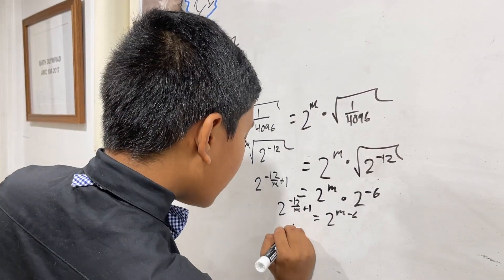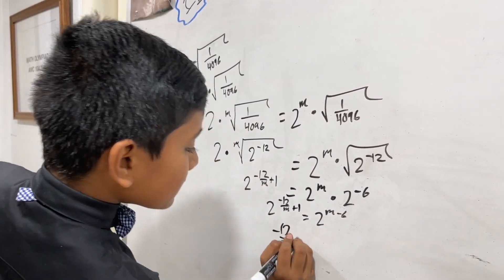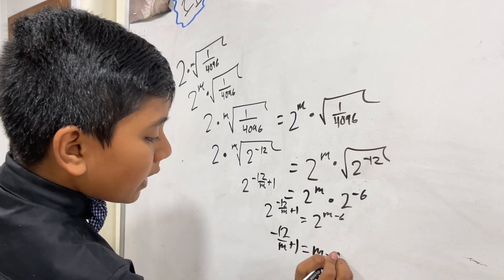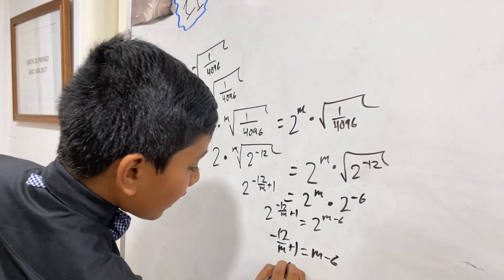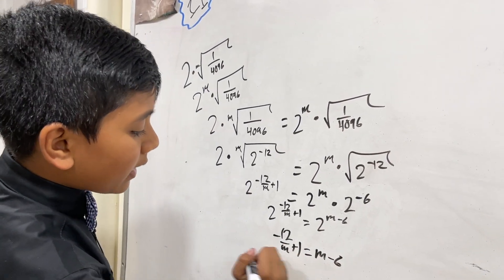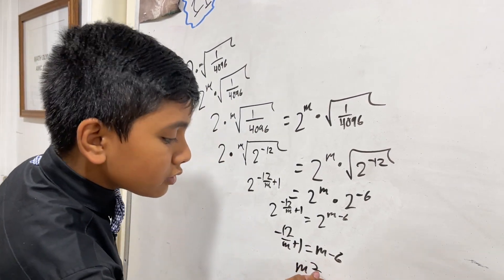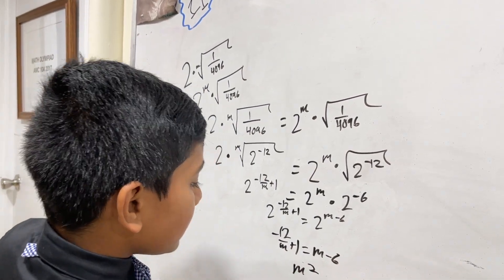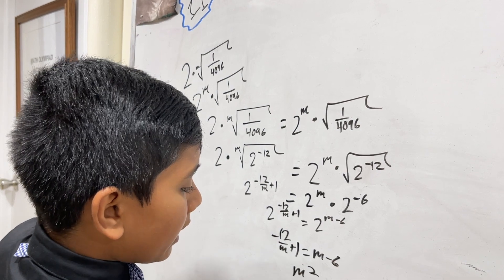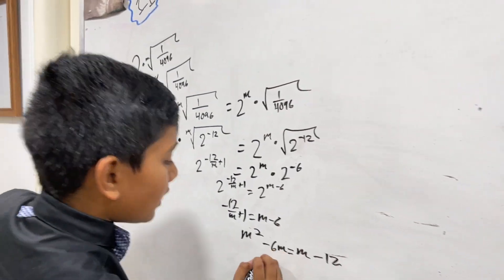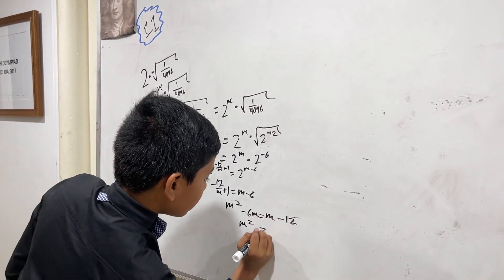So that means negative 12 over m plus 1 equals m minus 6. m squared, let's multiply everything by m now. So m squared minus 6m equals m minus 12. Now we have to solve this quadratic.